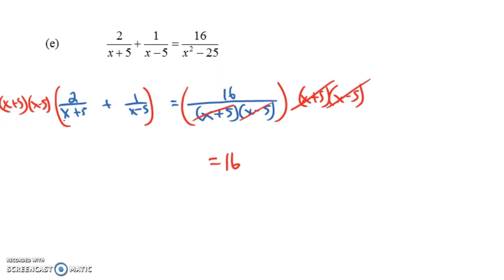So do x plus 5 times x minus 5 times the first term, and then times the second term. Well, when we multiply it by the first term, the x plus 5s go away, and we're just left with 2 times x minus 5.